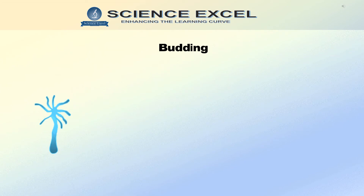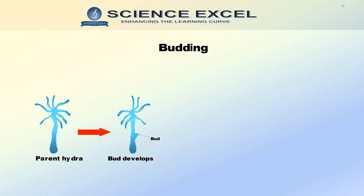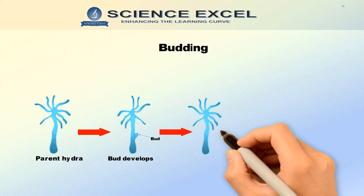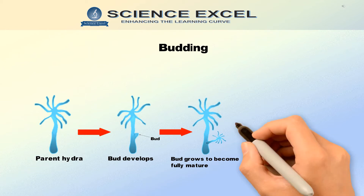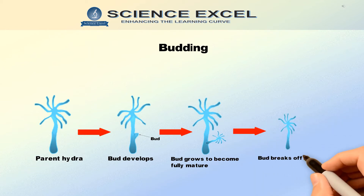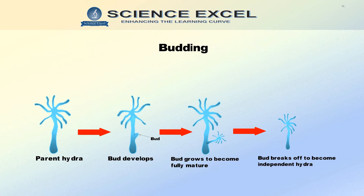In the case of hydra, the parent organism develops a bud as an outgrowth due to repeated cell division at one specific site on its body. These buds remain attached to the parent body and develop into tiny individuals. Once fully mature, they break off from the parent body to become new independent individuals.